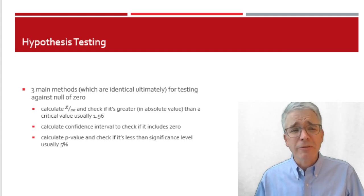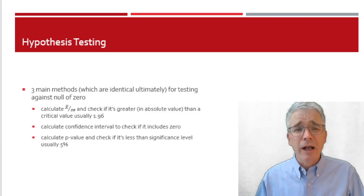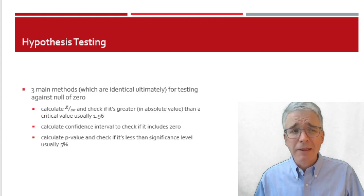In most hypothesis testing, there are three main methods that you commonly see, but it's worth reminding they're all formally identical. We can do some math to demonstrate that. Either I calculate x-bar in its standard error and see if it's greater an absolute value than some critical value, such as 1.96 for a 5% level, or I calculate the confidence interval, which is 1.96 times the standard error, plus or minus, and see if that includes zero.